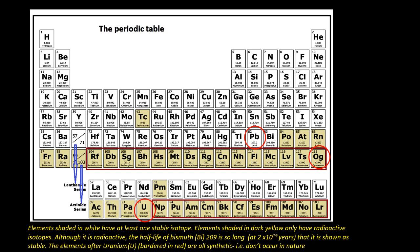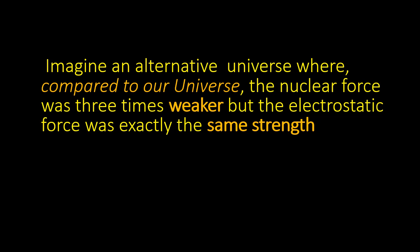All elements heavier than Uranium are synthetic, and when we get up to nuclei with more than 100 protons, they are very unstable. The only known isotope of the final element in the periodic table, Oganesson, which has 118 protons, has a half-life of less than one millisecond.